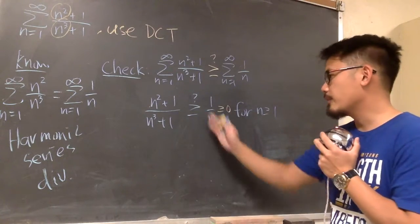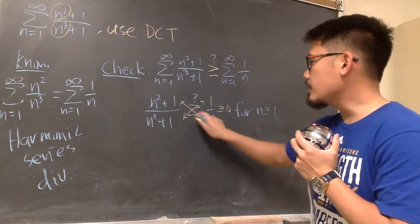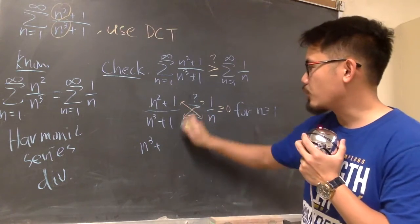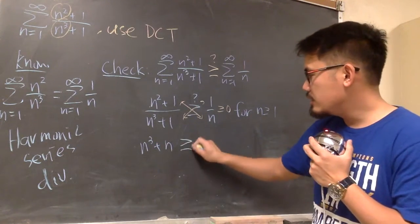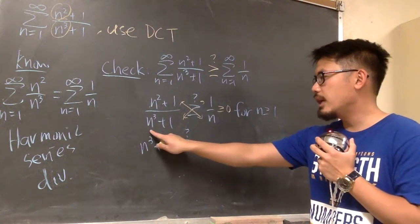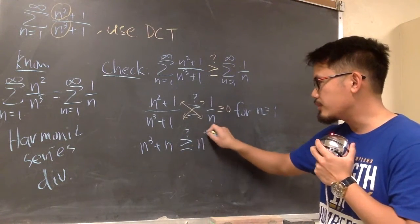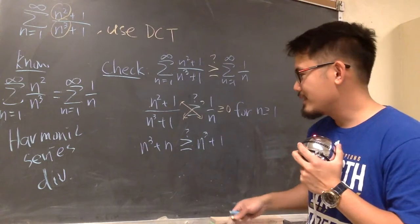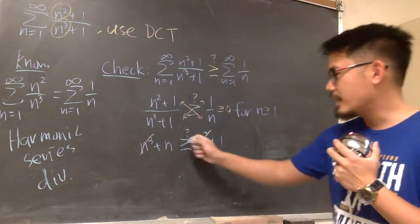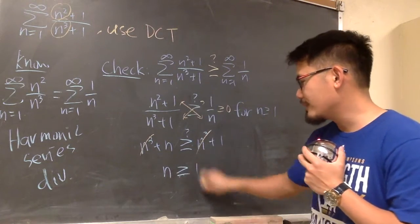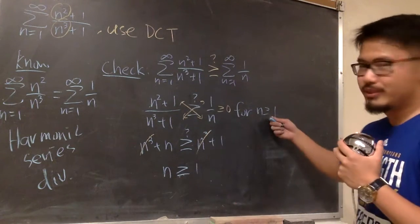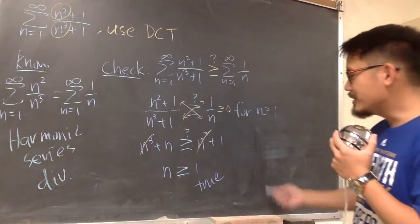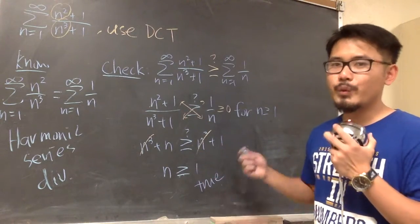Since all expressions are positive, we can cross-multiply. If we do n times that, we get n to the third power plus n. And we want to see if this is bigger than or equal to n to the third power plus 1. Both sides have n to the third power, so those cancel, and we are left with n greater than or equal to 1. This is true — just as we stated — so this is a valid inequality.